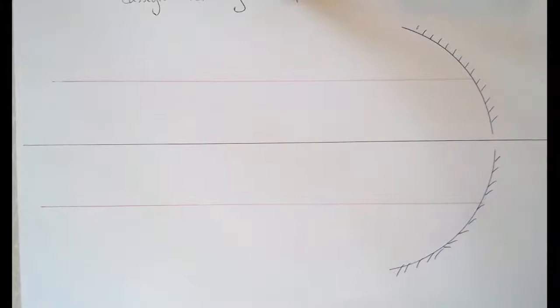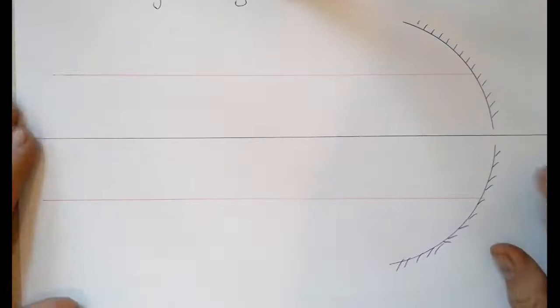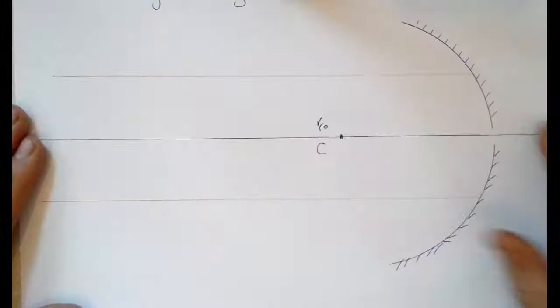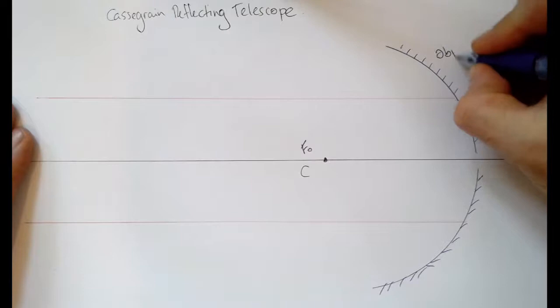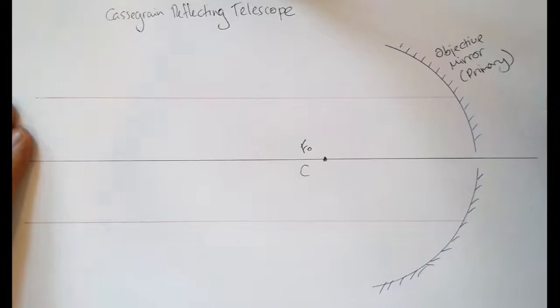The mirror is designed in such a way that any rays of light that come in parallel to our principal axis will get reflected towards this point here. We'll call that F-O. Sometimes we'll see it labelled as C as the centre of curvature for this objective mirror, sometimes called the primary mirror.